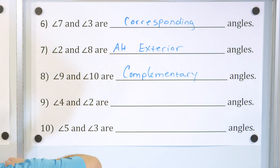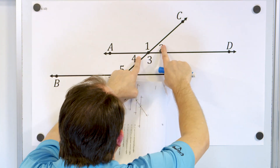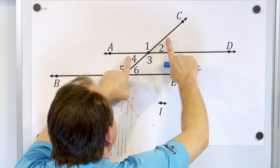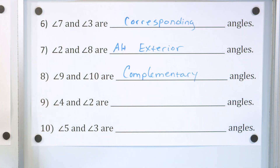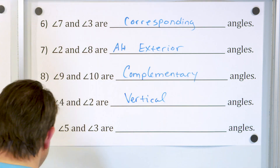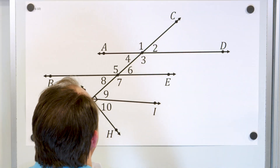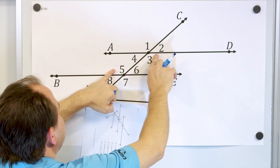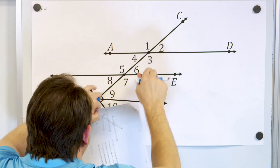Angle four and angle two — put your finger on them. These are opposite angles on the other side of an intersection, so we call them vertical angles, and they have the same measure. Finally, angle five and angle three — they're on alternate opposite sides of the transversal and on the interior. So they're alternate interior angles.